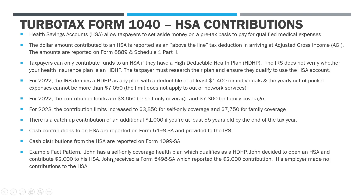Let's look at our fact pattern and jump into TurboTax. John is a single filing taxpayer with no kids or spouse, so he has a self-only coverage health plan which is a high deductible plan. He's confirmed with his insurance company that he qualifies, opened an HSA, and put $2,000 into it during the 2022 calendar year. He received a 5498-SA showing the $2,000 contribution, and his employer made no contributions to the HSA.